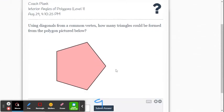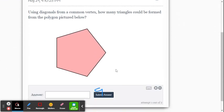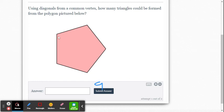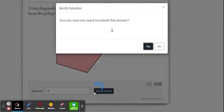And this one, use diagonals from the common vertex. How many triangles could be formed for this picture? Again, we can draw them in, or since we know this now, this is a pentagon. It has five sides. So it's going to have three of those diagonal triangles.